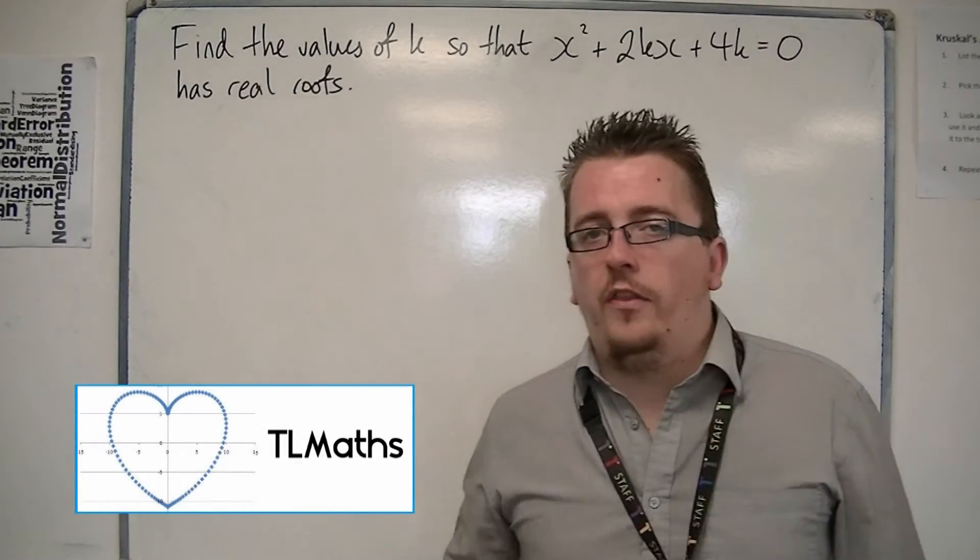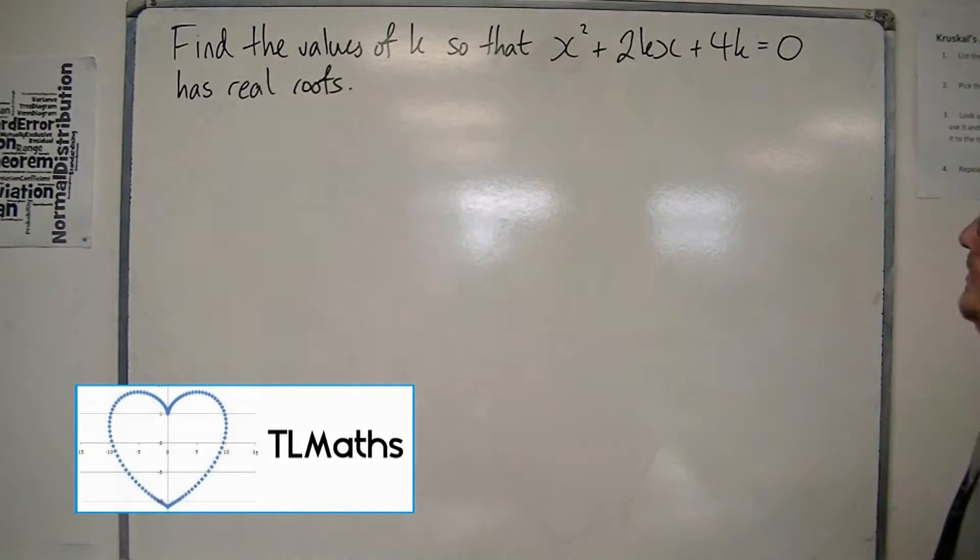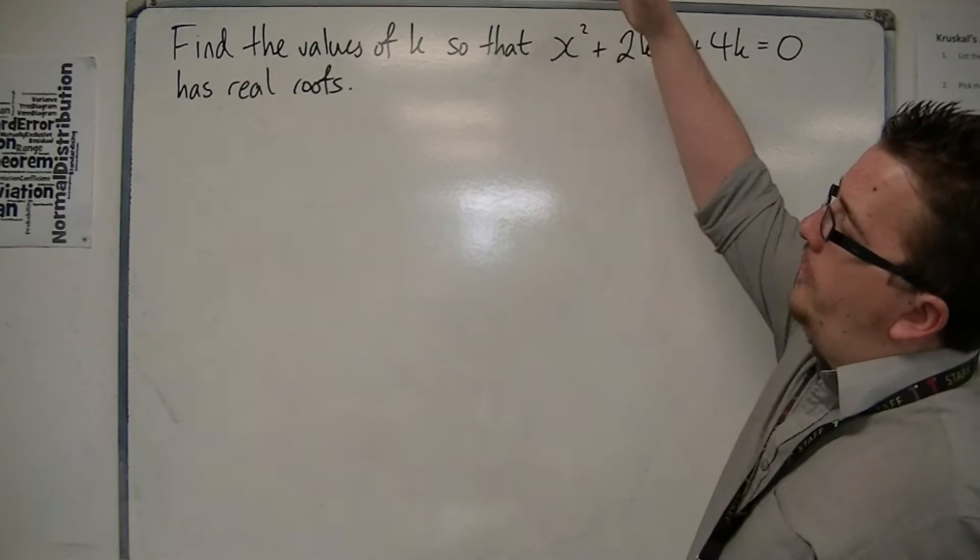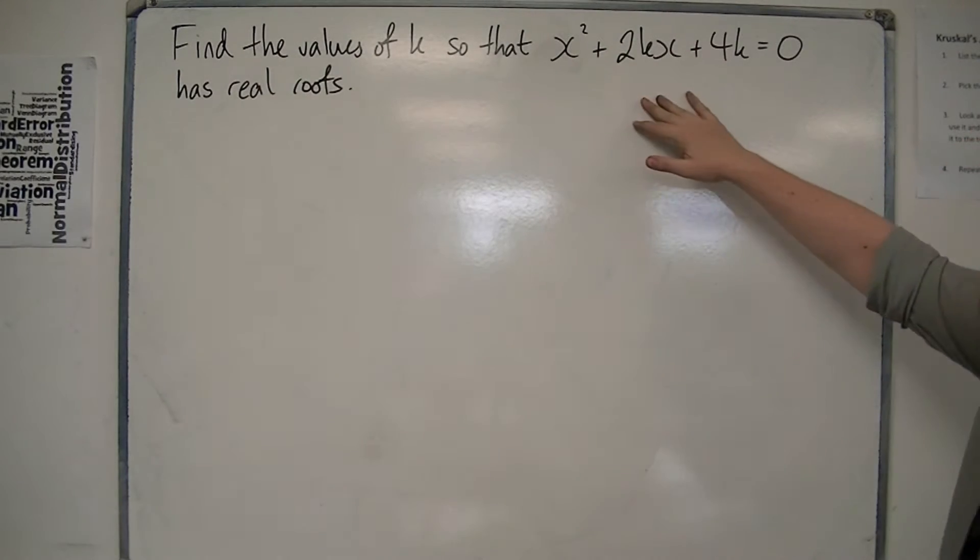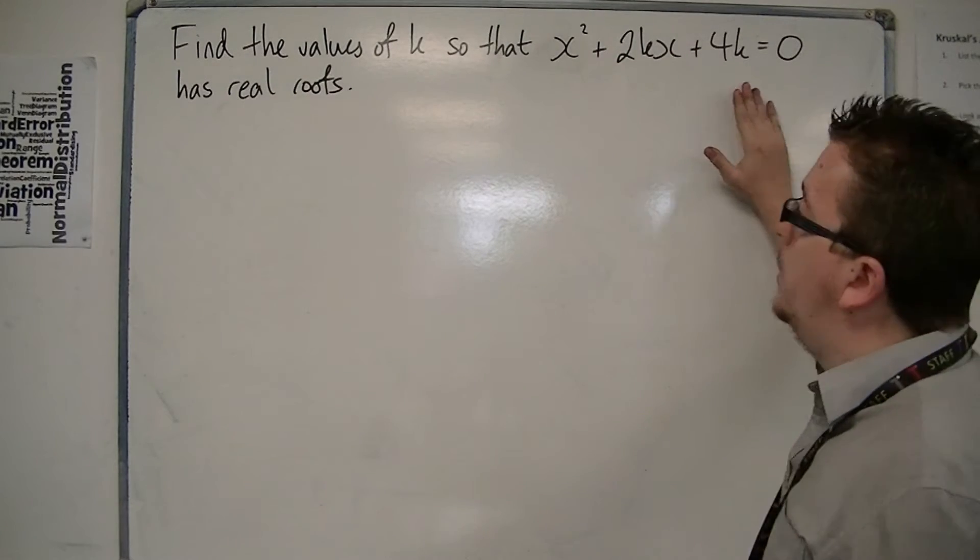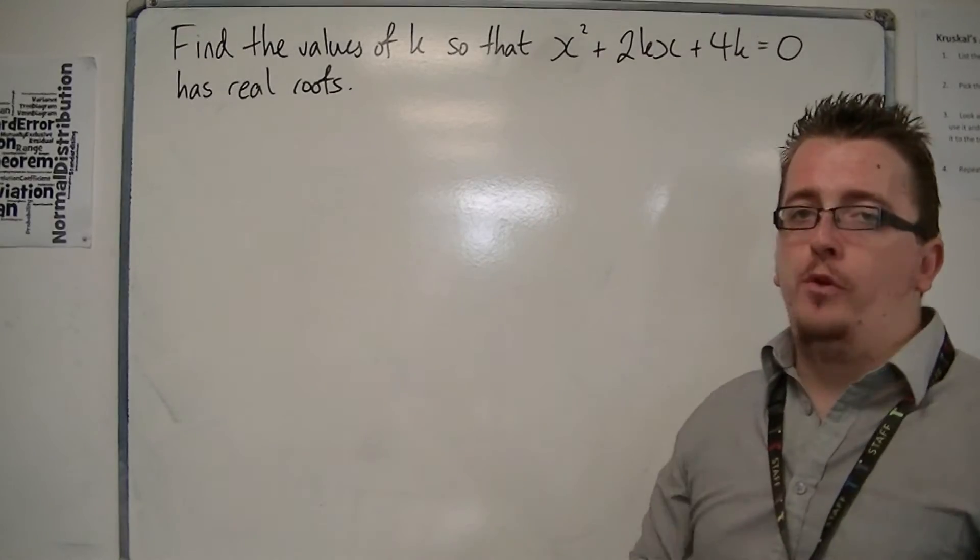OK, we're going to look at another discriminant quadratic inequality question here, and this time we're asked to find the values of k so that x squared plus 2kx plus 4k equals 0 has real roots.